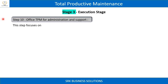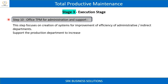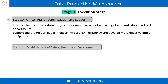Step 10: Office TPM for administration and support. This step focuses on creation of systems for improvement of efficiency of administrative and indirect departments, supporting the production department to increase its own efficiency and develop more effective office equipment.